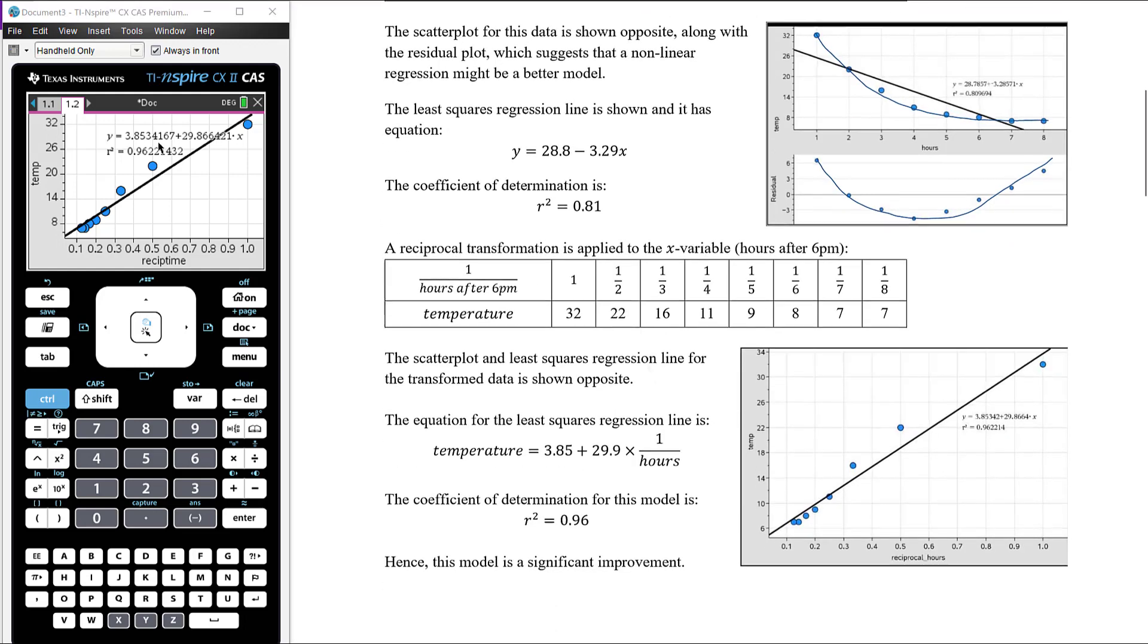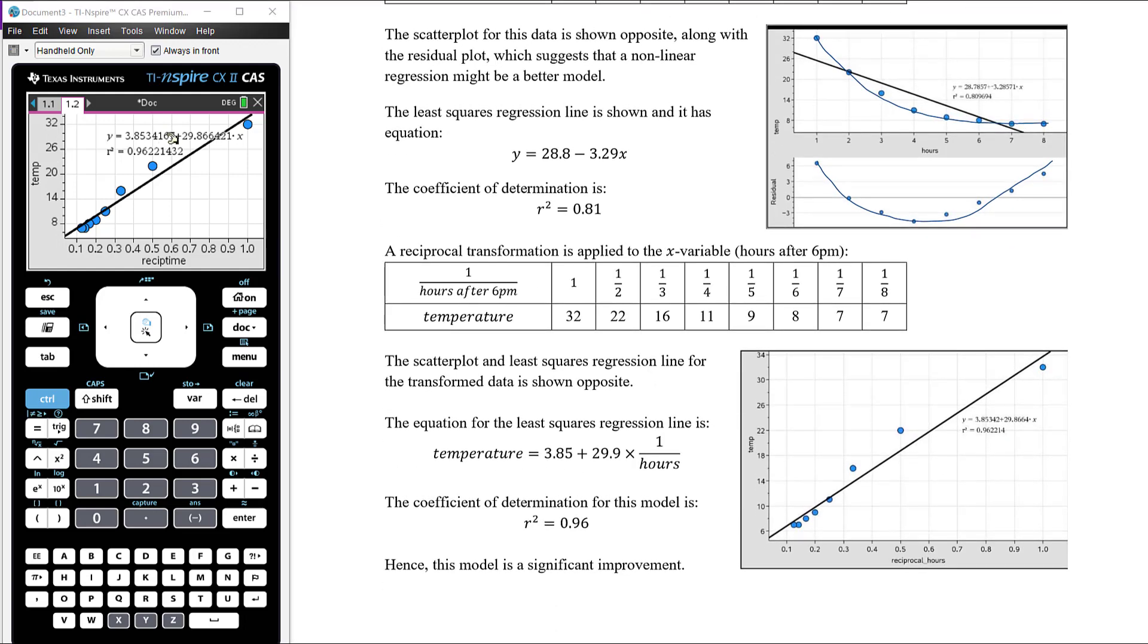We can see the regression equation here on the screen. The equation to three significant figures is y equals 3.85 plus 29.9x. But remember, x is no longer x; the horizontal axis is no longer time, it is one divided by time. So x should become one over x. Therefore, our equation is the temperature equals 3.85 plus 29.9 times one divided by the number of hours, and we're getting this much stronger model.